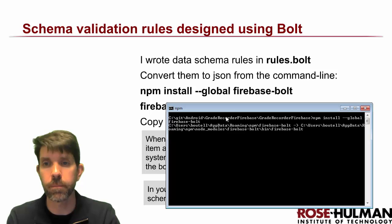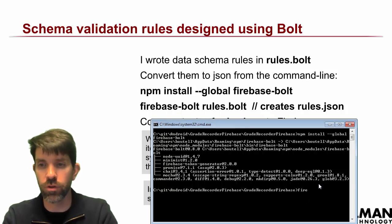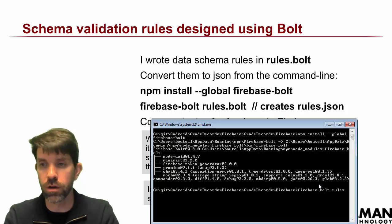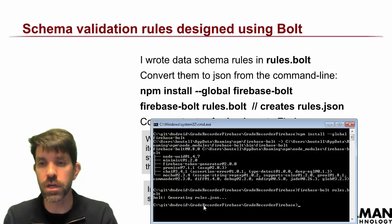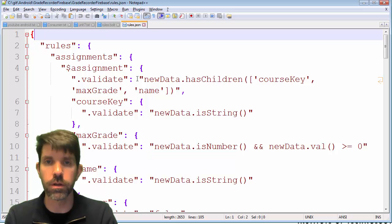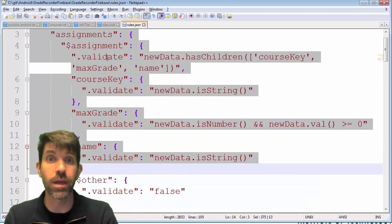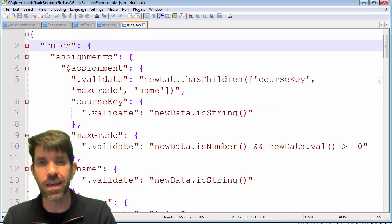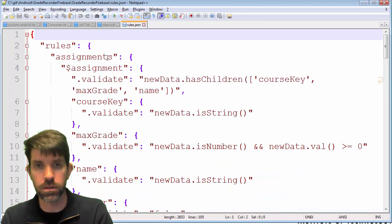If you haven't installed Bolt yet, run: npm install -g firebase-bolt. Once that's done, run firebase-bolt on your bolt file: firebase-bolt rules.bolt. If there are no syntax errors, it will generate a rules.json file. Open that up and you'll see all the rules in a clean JSON format, ready to paste into Firebase.